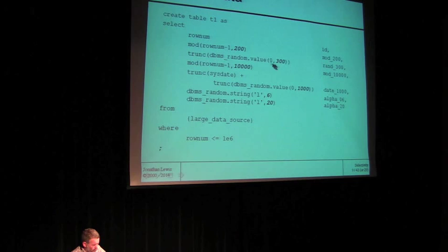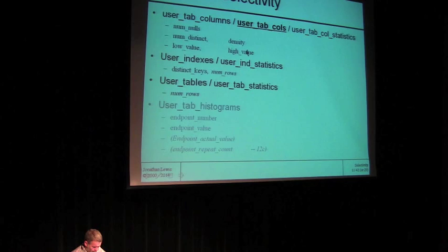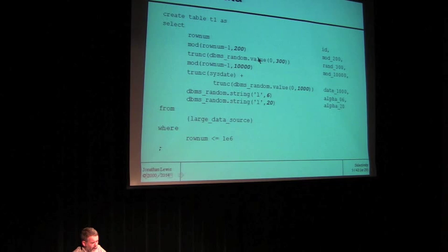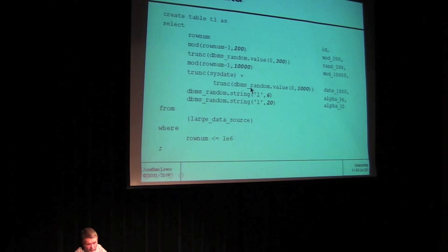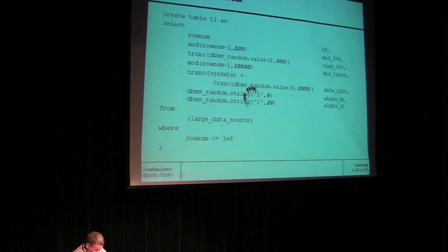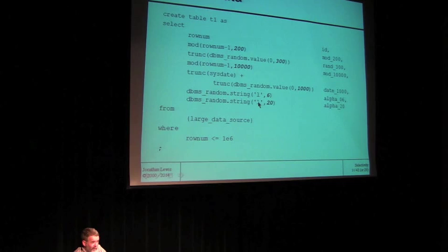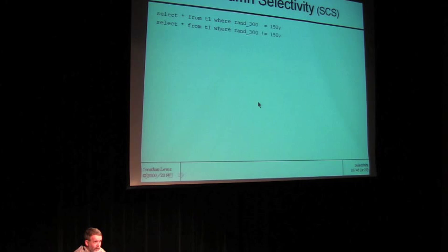I've got here a very large data set — a table with a million rows. Walking down this: we've got a column with 200 distinct values using the mod function; a column with 300 distinct values using DBMS_RANDOM numbers truncated to get integers; mod 10,000 again; and a trunk of sysdate to generate a date-based column — to show the arithmetic doesn't really change significantly as far as dates are concerned. Also 1,000 distinct values, random variations with a trunk. I've also generated random strings: a six-character lowercase string column and a 20-character lowercase string column. Character strings are very odd when you start doing arithmetic with them.